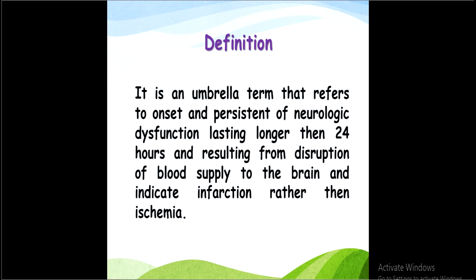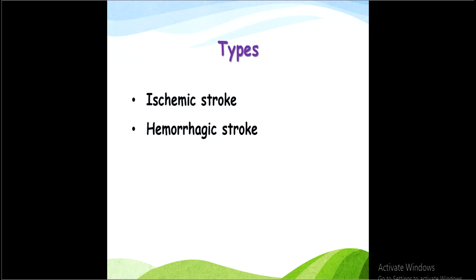इस condition को umbrella term भी बोलते हैं क्योंकि इसमें brain के functions disturb हो जाते हैं, और brain के functions disturb होने की वजह से पूरी body disturb हो जाती है। Brain ही एक ऐसी चीज़ है जिसके द्वारा हमारी पूरी body control होती है। अगर brain ही damage हो गया तो पूरी body control नहीं हो पाएगी, इसलिए इसे umbrella term बोलते हैं।